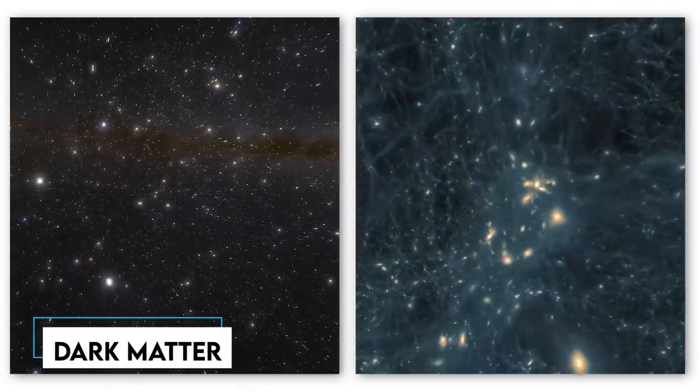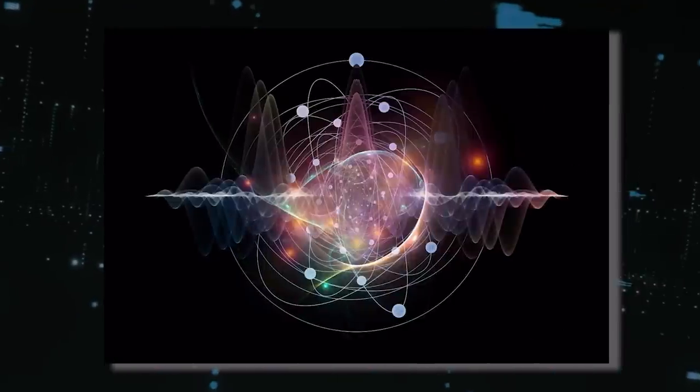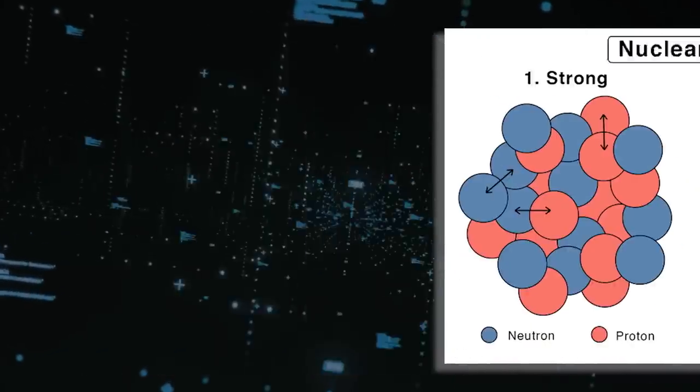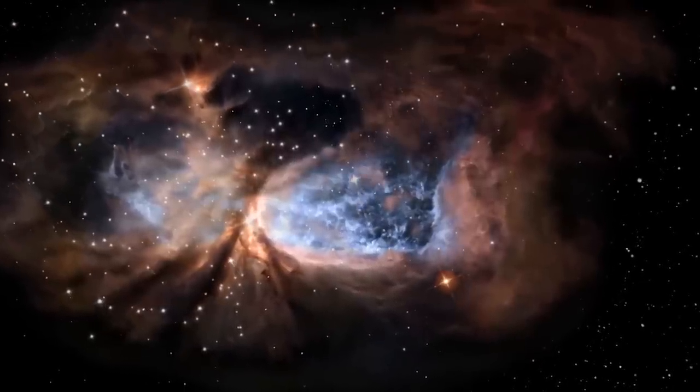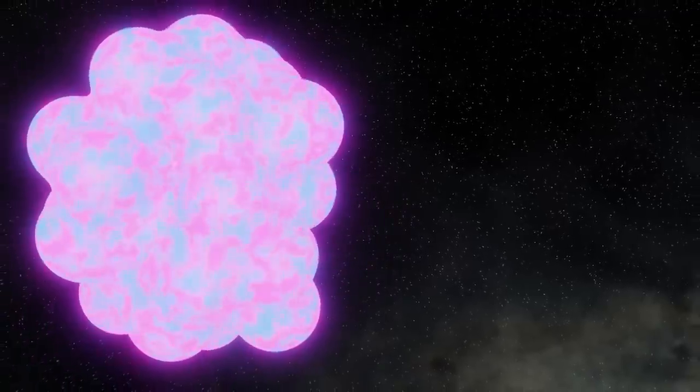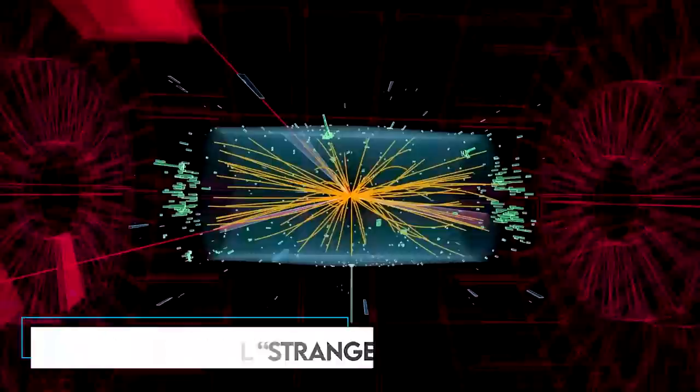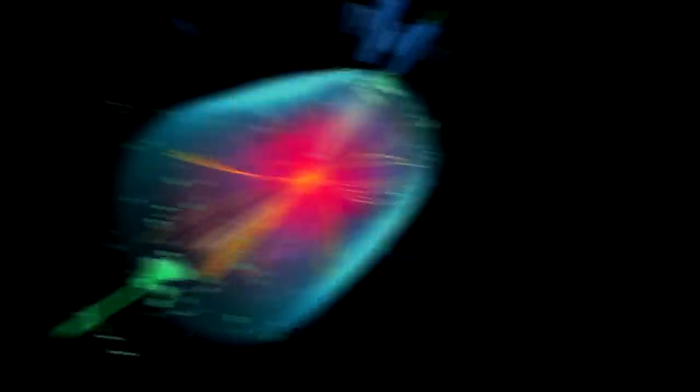Dark matter makes up over 80% of all matter in the universe, yet we cannot directly observe it. The LHC searches for theoretical dark matter candidates like weakly interacting massive particles or WIMPs. Grand unified theories aim to unify the electromagnetic, weak, and strong nuclear forces into one yet undiscovered quantum force that may have governed the infant universe. Other particles being searched for are magnetic monopoles and strange quarks that could combine into hypothetical strange lets with unexpected properties at the LHC's extremely high collision energies.